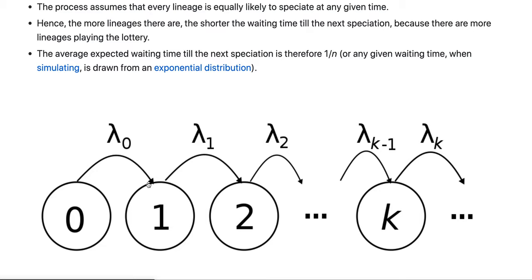I mean it happened once in the history of life on Earth. And then from one to two, from two to three, ad infinitum. So this is the pure birth process, or Yule process.